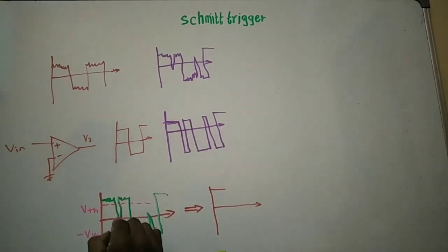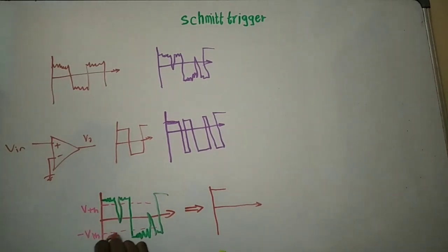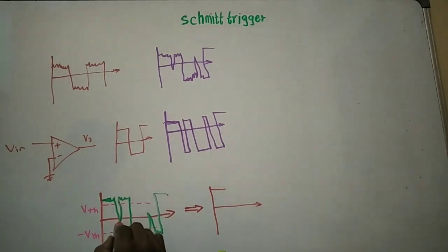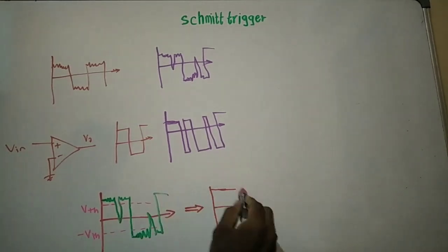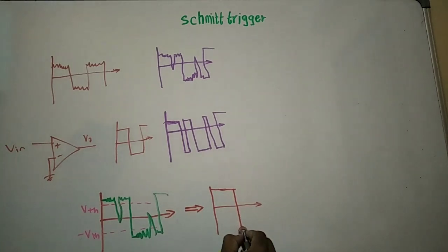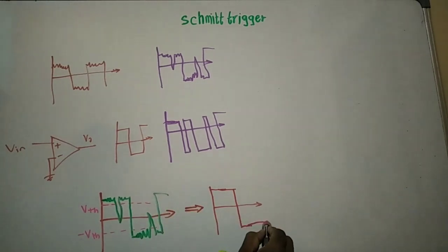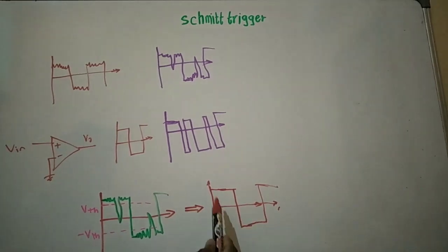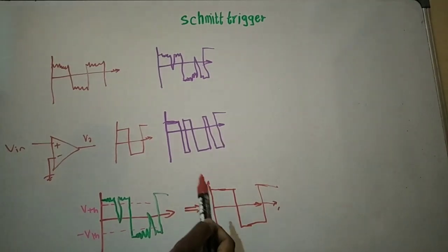When the signal has noise and crosses the zero level, it won't go to negative Vsat, because the output only goes to minus Vsat when the signal goes lower than the negative threshold voltage. Since it is just crossing zero and not crossing minus Vth, the output will stay at plus Vsat. Whenever the signal goes lower than the negative threshold, your signal goes to minus Vsat, and it will stay there until the signal crosses the positive threshold again. So you get a very nice output waveform — the signal is not distorted, and the noise is completely eliminated. That is the advantage of Schmitt Trigger.